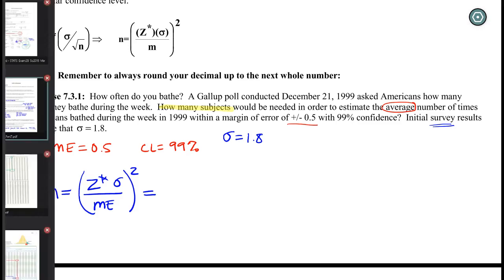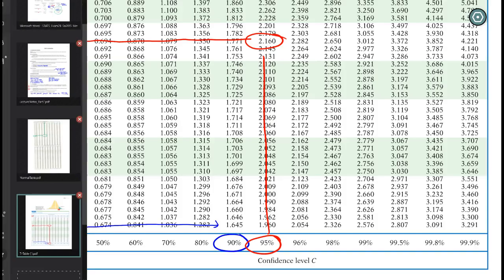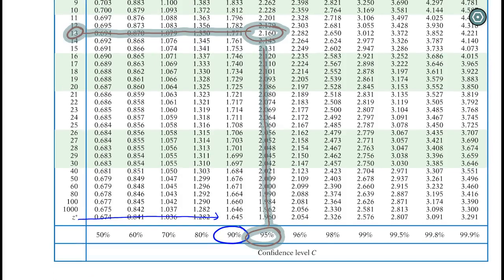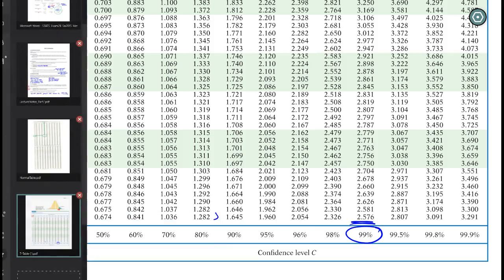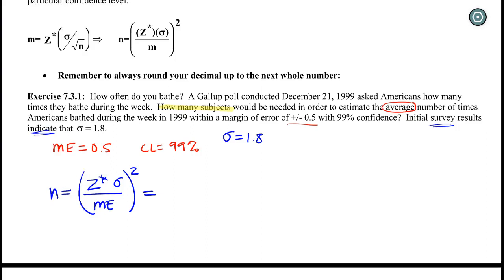Our Z star we're going to look up on our t table. We don't need the t's, but we can grab the Z. We need 99%, which has a corresponding Z star of 2.576.